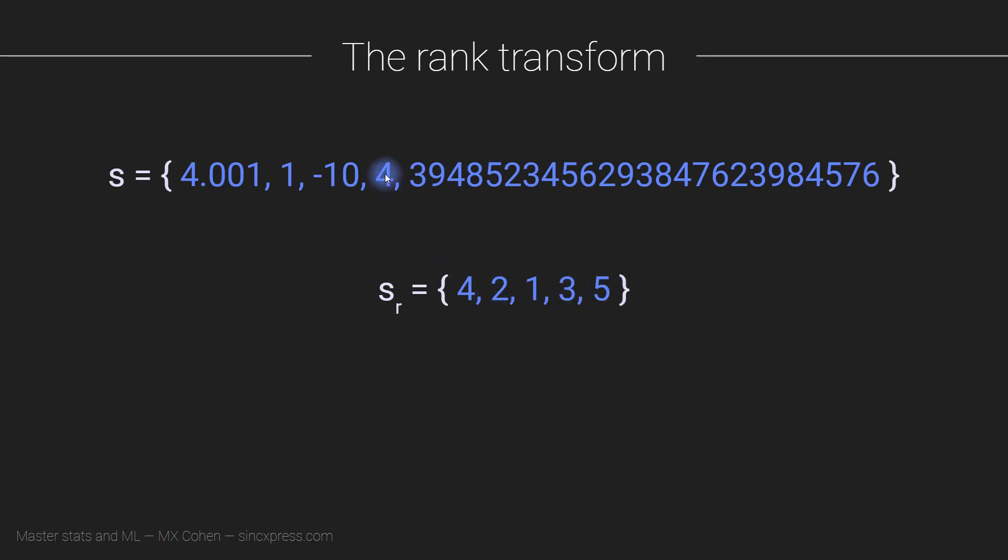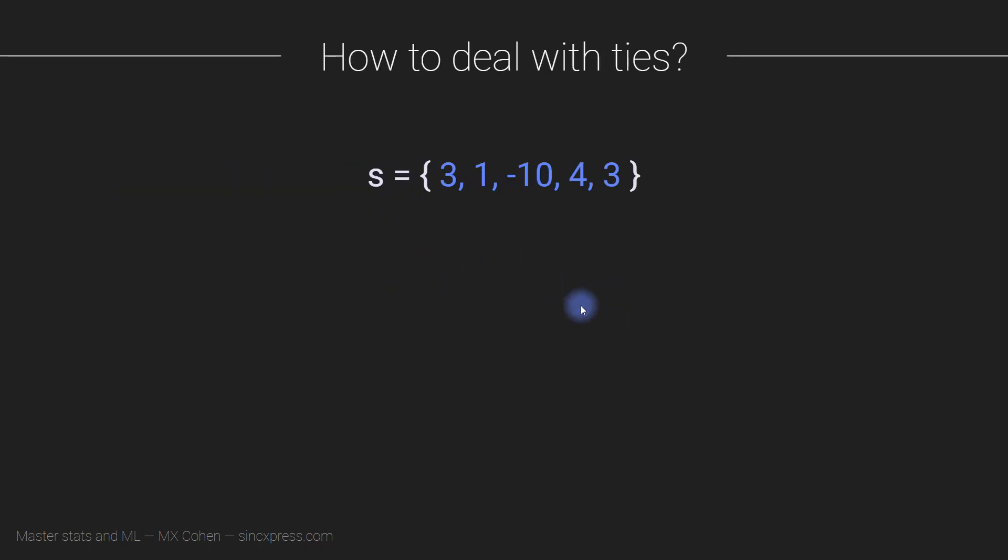Now what do we do if we have repeated numbers? For example, let's imagine this other set where three numbers are all unique—1, minus 10, and 4—but then we have 3 here repeating. We have the number 3 twice in this set. So how do we come up with ordinal ranks for this set of numbers?